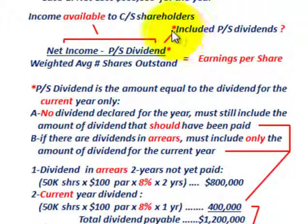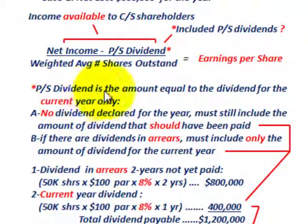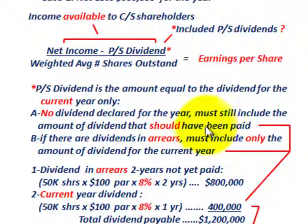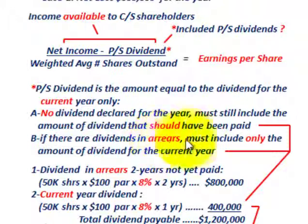The question is: what is included in the preferred stock dividend? The rule is it's the amount equal to the dividend for the current year only. Even if Corp A doesn't declare any dividend, you must still include the amount that should have been paid. And if there are dividends in arrears, you include only the current year dividend amount.